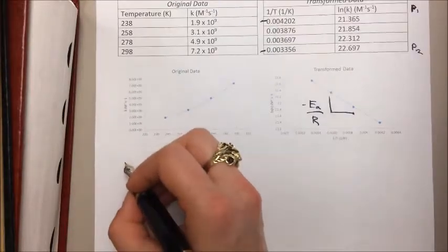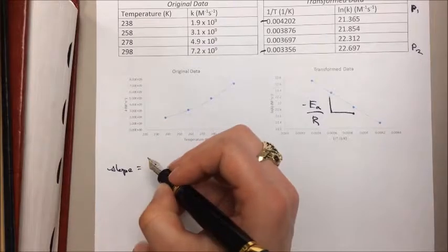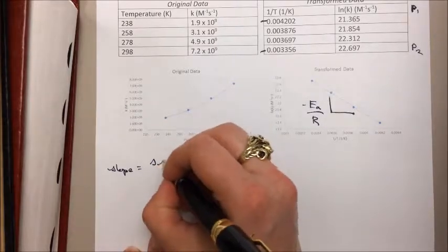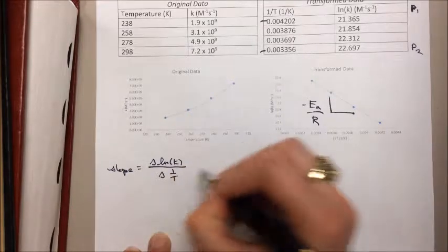Now to get the slope, we're going to start crunching some numbers here. The slope is going to be the change in the lnK term over the change in the 1 over T term.